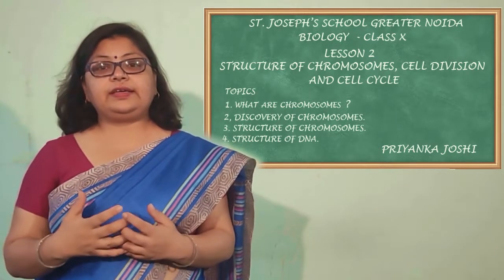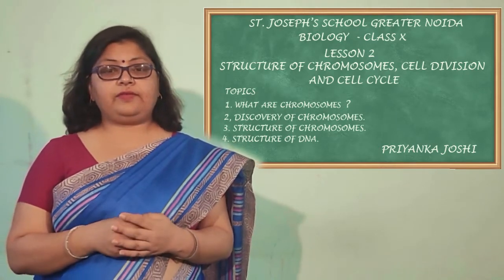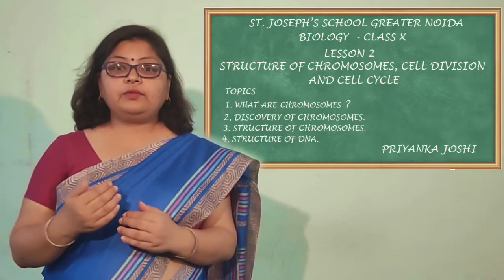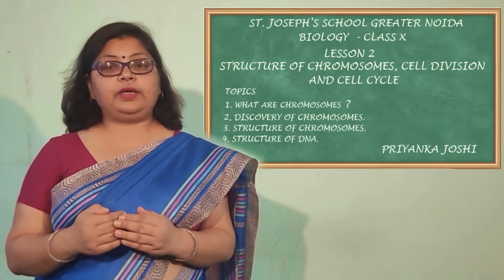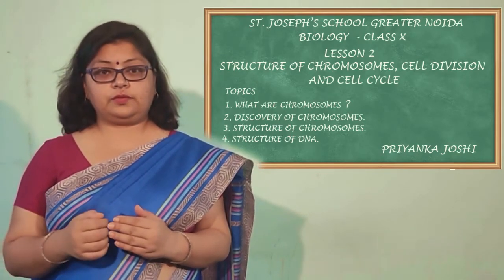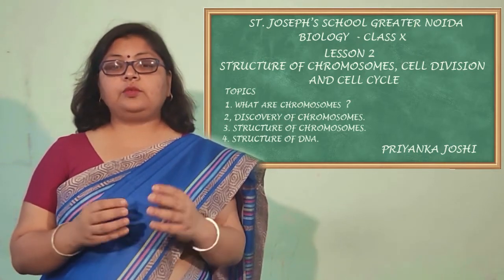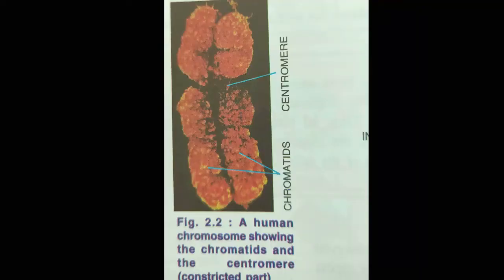We have studied what chromosomes are and their discovery. Now we come to the structure of chromosomes. During cell division, chromosomes appear with two strands known as sister chromatids, which are attached to each other at a point known as the centromere.